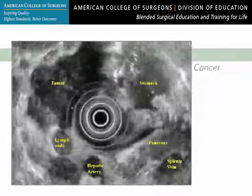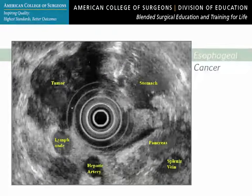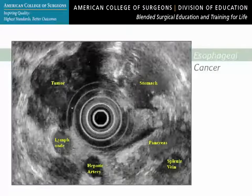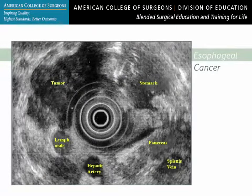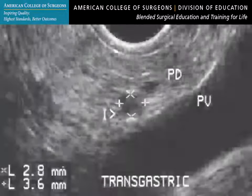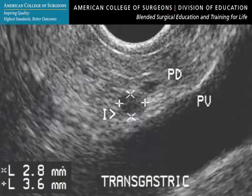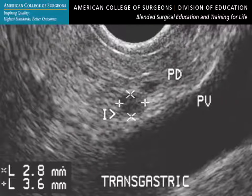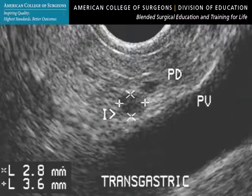Endoscopic ultrasound has recently shown its utility in evaluation of various malignant tumors such as cancers of the esophagus, stomach, biliary tract, and lung. This image demonstrates the endoscopic ultrasound of a pancreatic neuroendocrine tumor. The complex images afforded by endoscopic ultrasound provide strikingly clear anatomy of structures that are usually difficult to access.